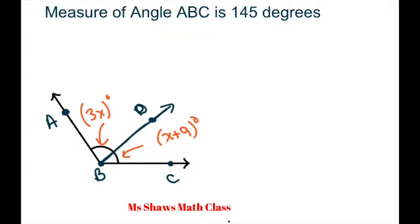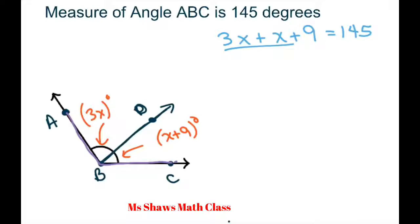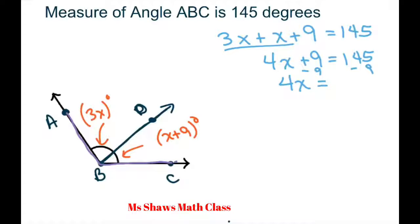For the last one, the measure of angle ABC is 145 degrees. We take 3x plus x plus 9 equals 145, so 4x plus 9 equals 145. Subtract 9 from both sides to get 4x equals 136. Divide both sides by 4 and x equals 34.